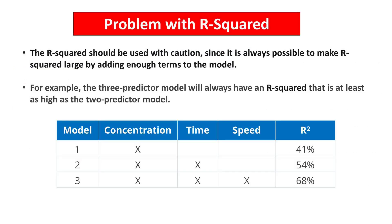R-squared should be used with caution, since it is always possible to make R-squared large by adding enough terms to the model. For example, the 3-predictor model will always have an R-squared that is at least as high as the 2-predictor model.